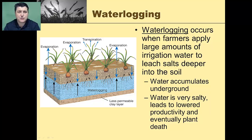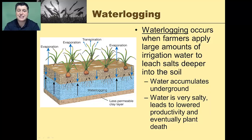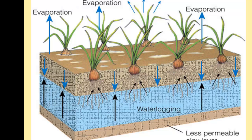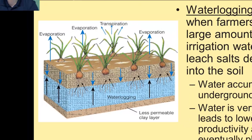Another major issue is water logging, which occurs when farmers apply too much water to the soil and it leaches salts deeper into the ground. The water accumulates underground and is typically very salty, which lowers land productivity and eventually leads to plant death. To prevent water logging, we simply need to monitor how much water we're applying to our soil.